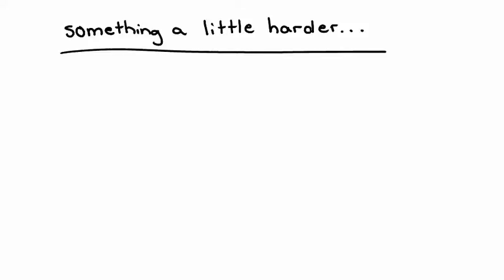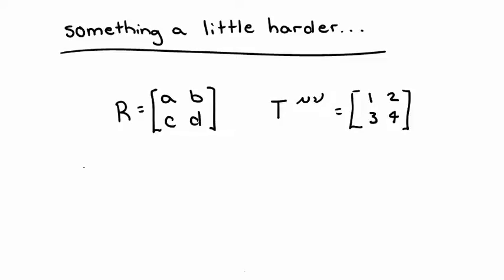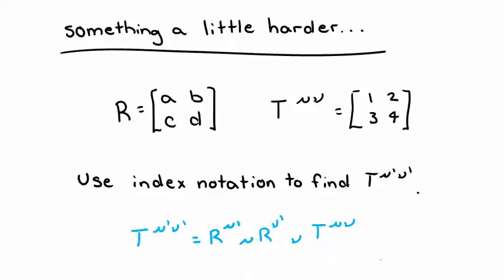Now that we're a little more comfortable with index notation operations, let's do something a little harder. Here, we have a 2 by 2 transformation matrix, and a matrix representation with two upper indices, which we write as T mu nu. For this exercise, I want you to find the components of this representation in the transformed coordinate system. In other words, we're looking for T mu prime nu prime. Here's a hint to get you started. In order to transform both indices, we'll need to apply the transformation twice, once for mu and once for nu. We'll end up with two contracted indices, mu and nu. Our equation should look like T mu prime nu prime equals R mu prime mu times R nu prime nu times T mu nu.